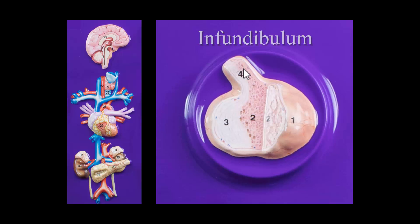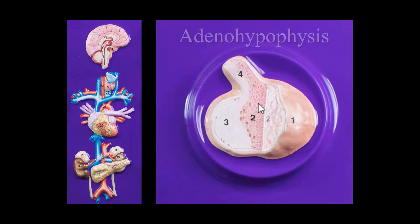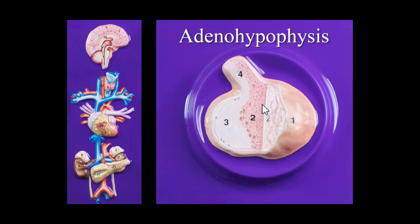Now the pituitary gland is showing two parts here. This is the anterior pituitary, which is called the adenohypophysis — adeno refers to glandular. So this is a gland, and under the microscope you can tell that it's very glandular, and it's going to produce several hormones that you'll learn about in lecture.